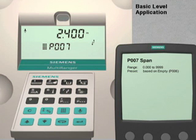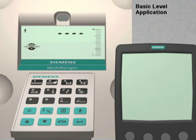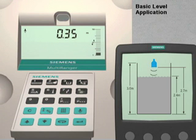We have now programmed the Multiranger for this application. To exit the programming mode, we simply press the Mode key. The Multiranger will now display the current level reading in the selected dimensional units.